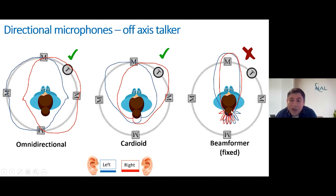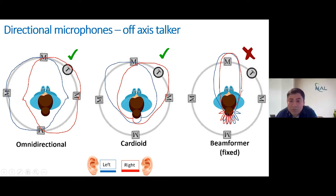The problem comes with higher-directionality systems. Because of the way they are designed, when the target sound moves to the right and off the main axis, it is no longer in the pathway of this narrow directionality. As a consequence, the person is not able to hear that sound effectively, and in fact the system starts to emphasize something else like noise. In this condition, this type of technology will not be positive for the listener and will produce a negative effect.